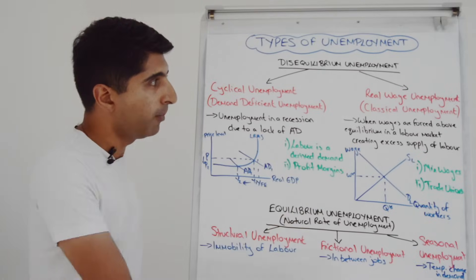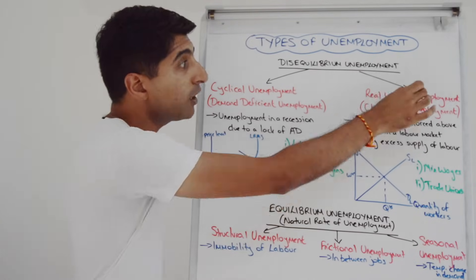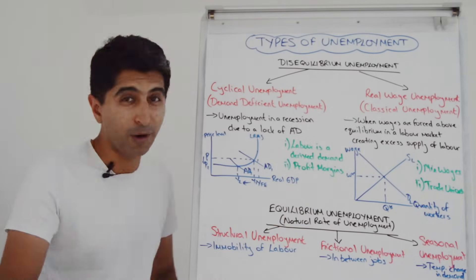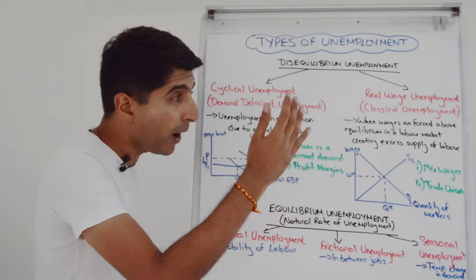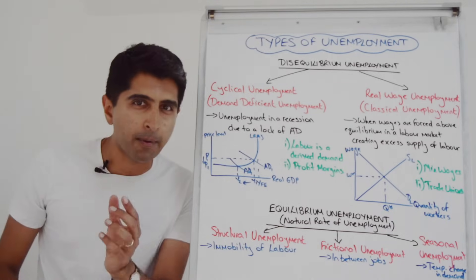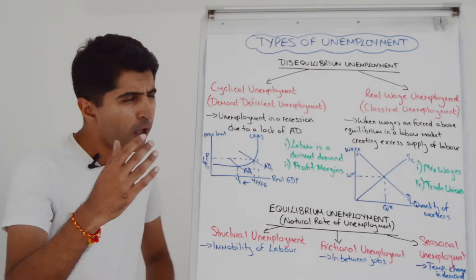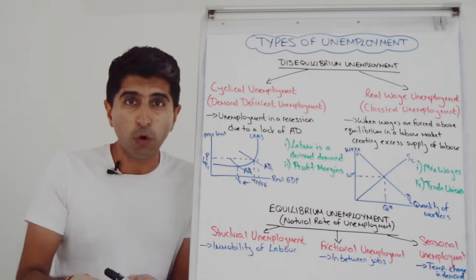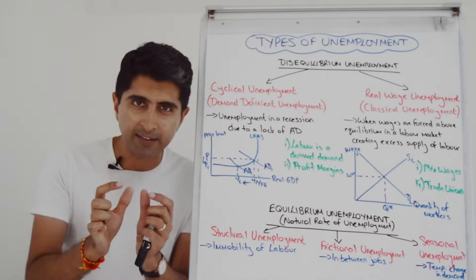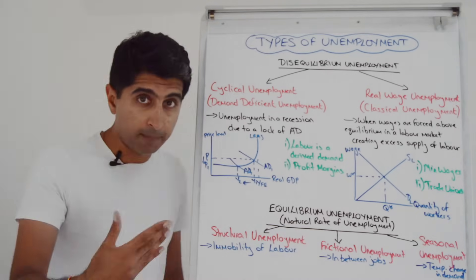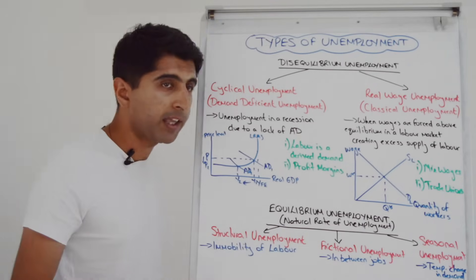The other type of unemployment within disequilibrium unemployment is real wage unemployment, also known as classical unemployment. This is when wages are forced above equilibrium in the labour market, creating an excess supply of labour. Whenever wages or prices rise above equilibrium, there will be an excess supply of labour. Let's show that in action on this diagram.